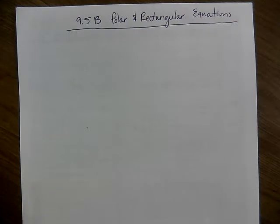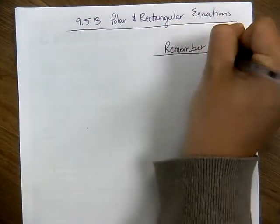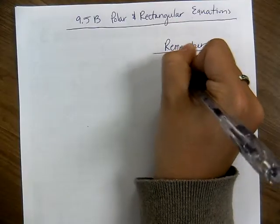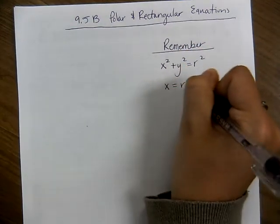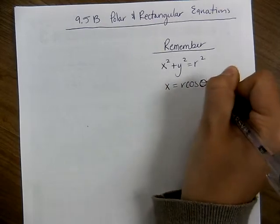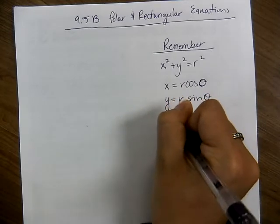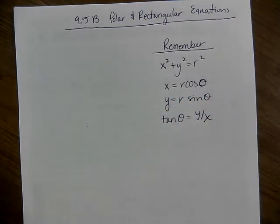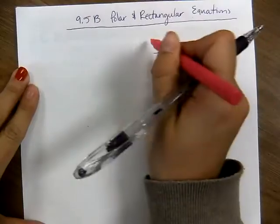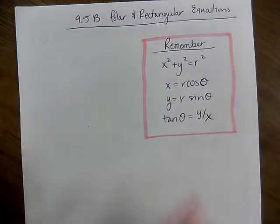Yesterday we figured out those four pieces of information that we need to remember. Let's make ourselves a note again. We have x²+y²=r², x=r cos θ, y=r sin θ, and tan θ=y/x. Those were the four pieces we talked about yesterday, and you definitely need all of those for 9.5.